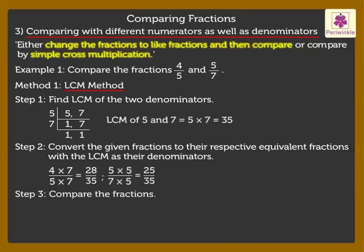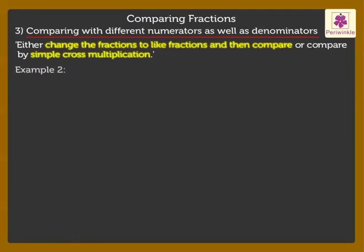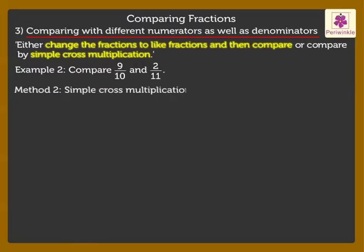Here 28 upon 35 is greater than 25 upon 35. Hence we say 4 upon 5 is greater than 5 upon 7. Let us compare the next example using the second method, simple cross multiplication.